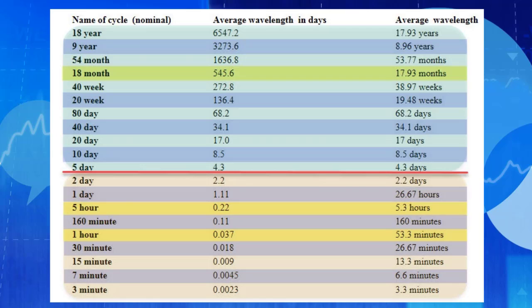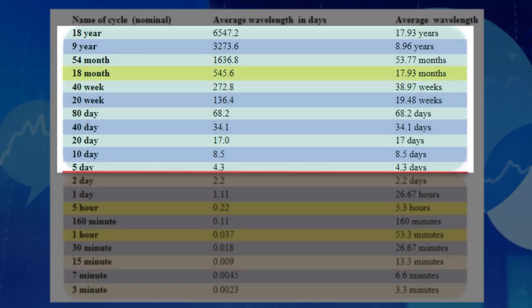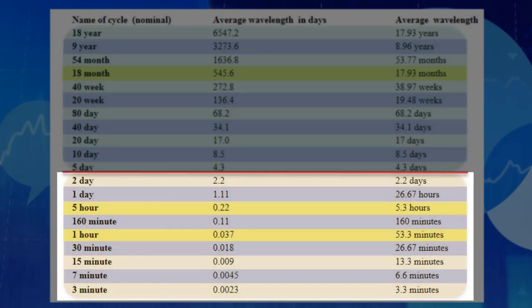Here is that list of cycles — the nominal model defined by Hurst 50 years ago. The top half of this list, the cycles with the greenish colored background, are the cycles discovered and identified by Hurst 50 years ago. The bottom half with the orange background are cycles that have been discovered since he first published his nominal model.